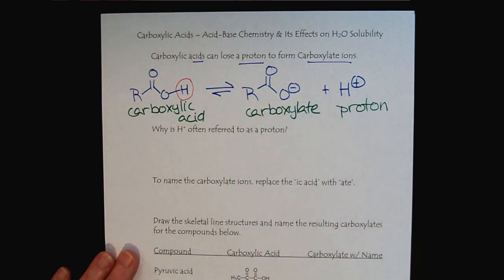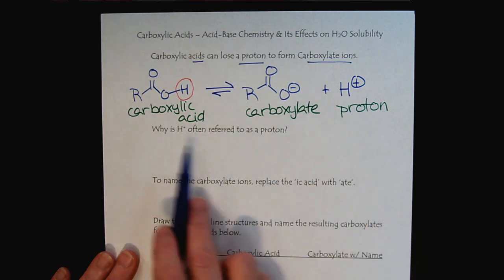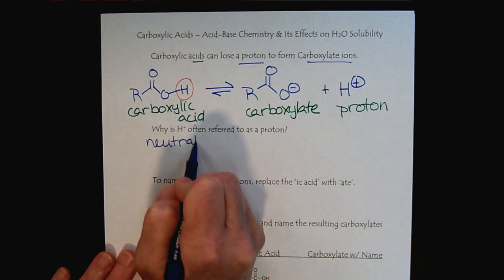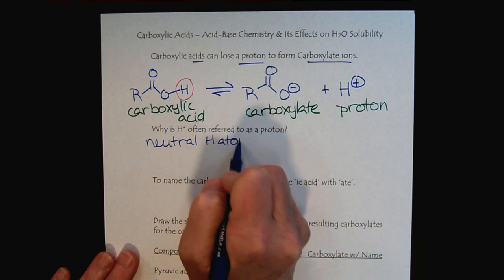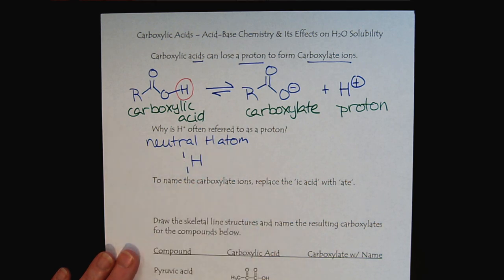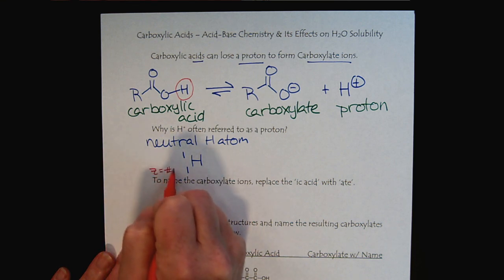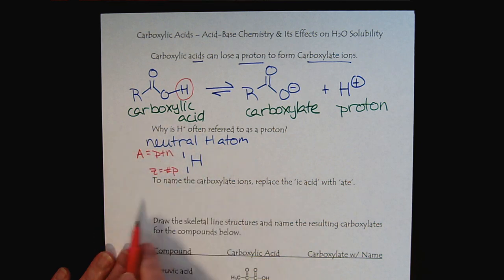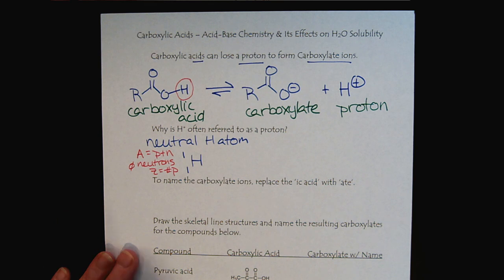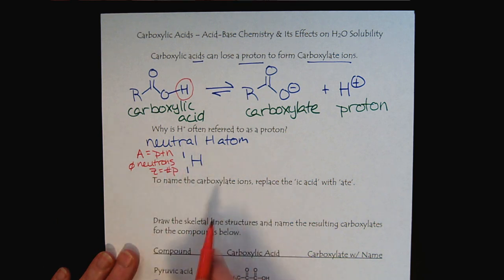A brief review of why do we call H plus a proton. Let's think about a neutral hydrogen atom. If we had a neutral hydrogen atom, it has one proton. And then the mass number is one as well. So this is our Z, our atomic number, our number of protons. And this is A, our mass number, which is protons plus neutrons. And so we see that there are zero neutrons. And of course, if we have one proton and it's neutral, there's that one electron floating around.